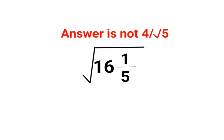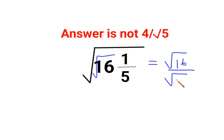Welcome everyone. A lot of people messed this up — they thought that this is root of 15 multiplied by 1. So root of 16 multiplied by 1 means root 16 divided by root 5, which gets you the answer as 4 upon root 5.